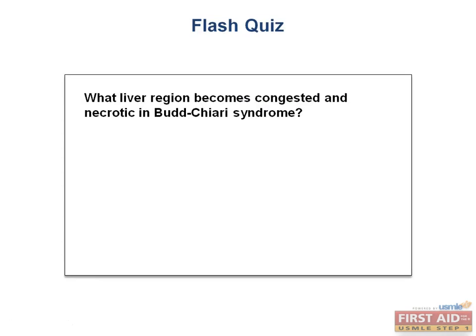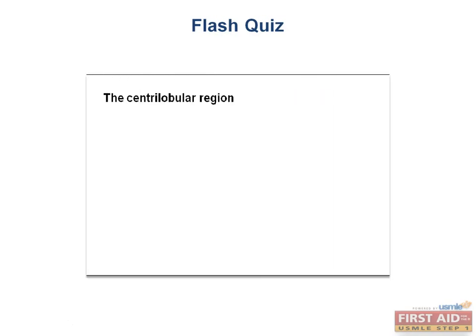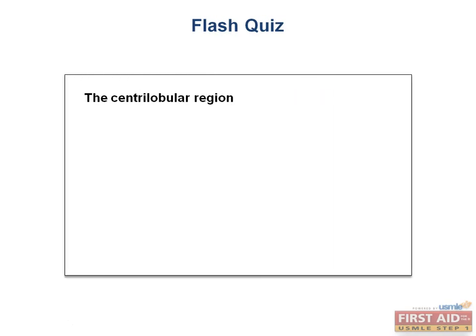Flash quiz: what liver region becomes congested and necrotic in Budd-Chiari syndrome? That's right, it's the centrilobular region.